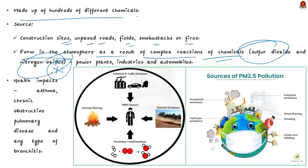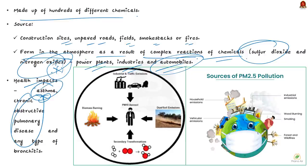Most particles form in the atmosphere as a result of complex reactions of chemicals such as sulfur dioxide and nitrogen oxides — pollutants emitted from power plants, industries, and automobiles. It has serious health impacts: when inhaled, it can cause a wide range of respiratory disorders such as asthma and chronic obstructive pulmonary disease, because PM can penetrate deep inside the lungs and damage them. That is why monitoring and mitigating PM pollution becomes important.